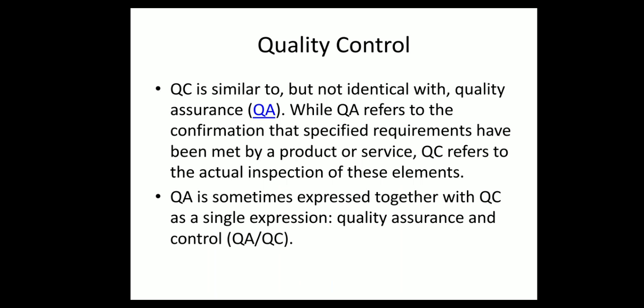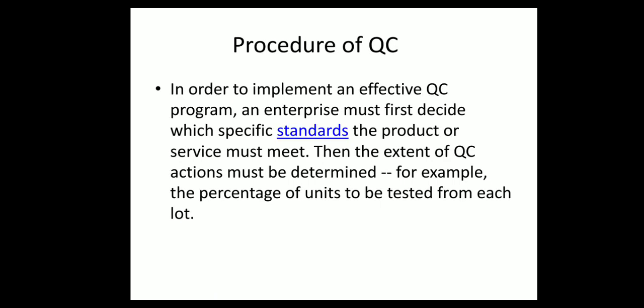QA is sometimes expressed together with QC as a single expression: quality assurance and quality control. Procedure of QC: in order to implement an effective QC program, an enterprise must first decide which specific standards the product or service must meet. Then the extent of QC actions must be determined — for example, the percentage of units to be tested from each lot.